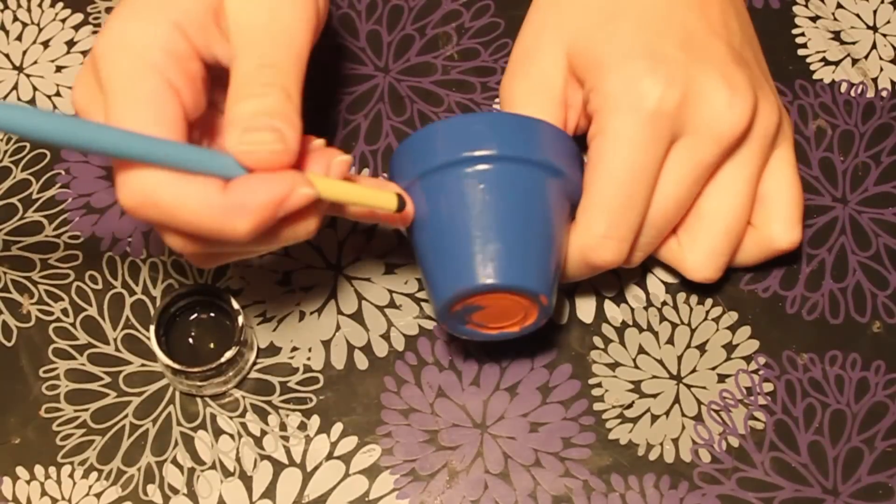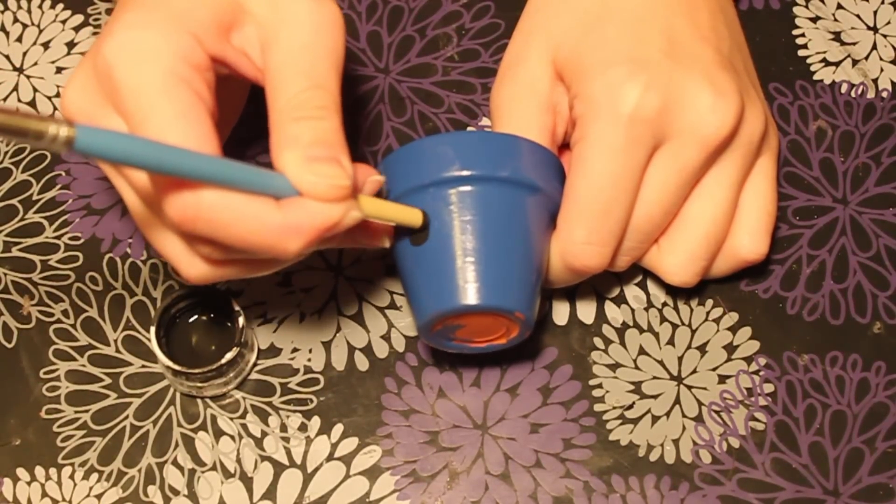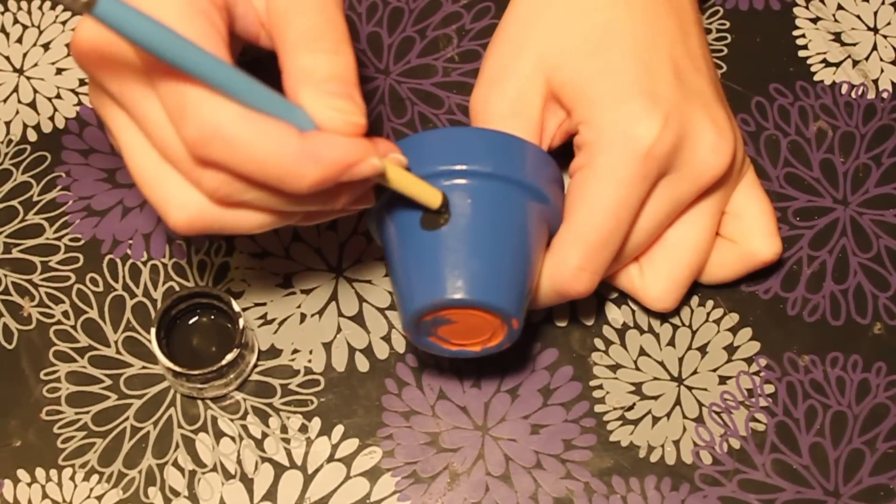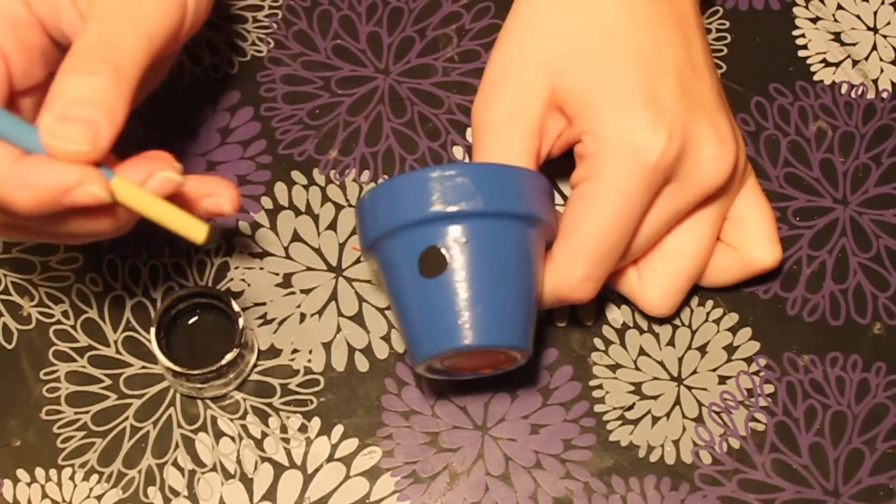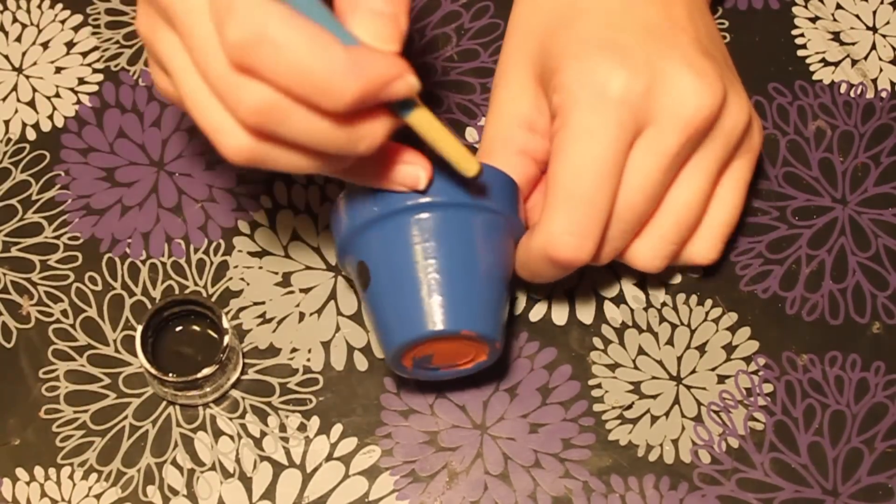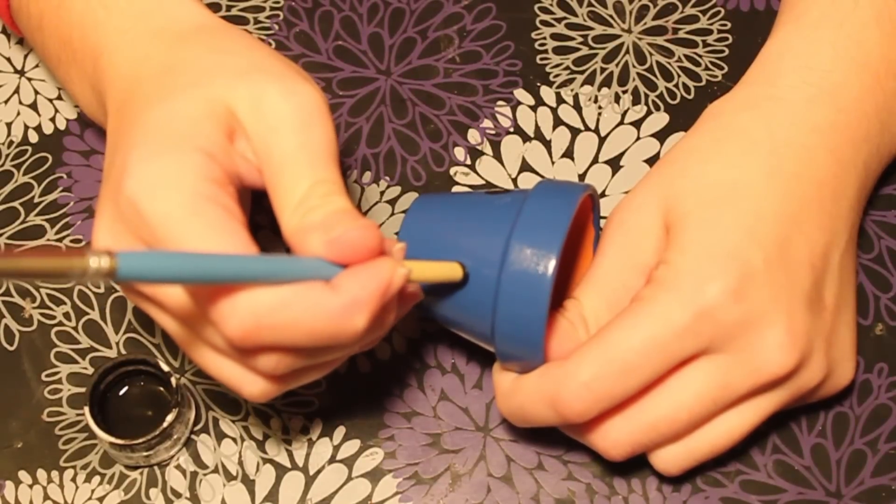You're going to go ahead and grab your black paint and I use the back end of my paintbrush, but if you're skilled at using a paintbrush, you can just use the tip. You're going to make two circles and then a little oval shape for the mouth and you're going to let that dry.